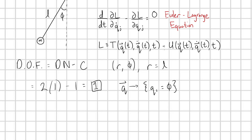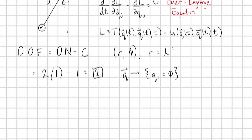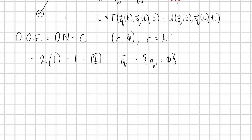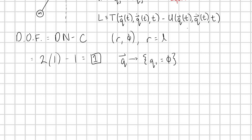So from here, we just need to define our Lagrangian. For our Lagrangian we need the kinetic energy as a function of q1 (which is phi) and the potential energy as a function of phi as well. Let's go ahead and figure those out, starting with potential energy.